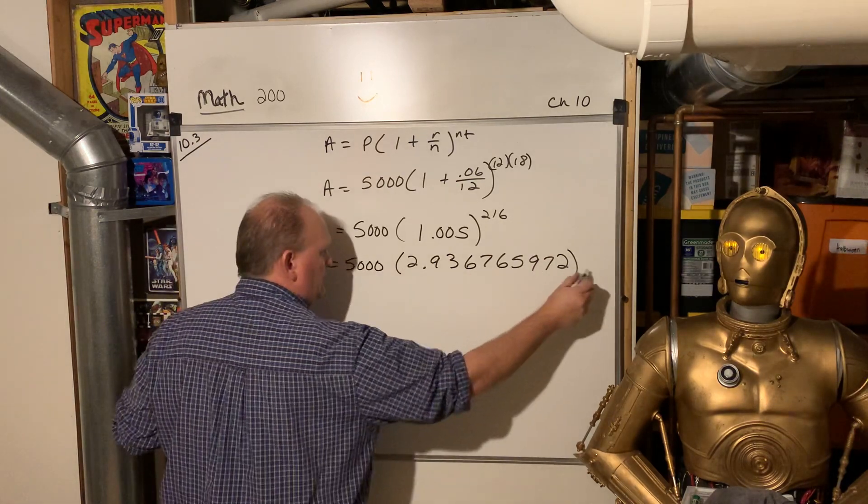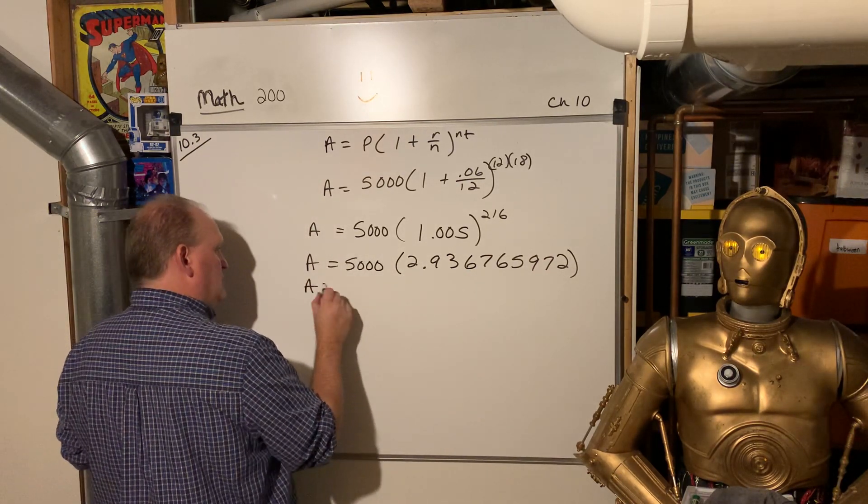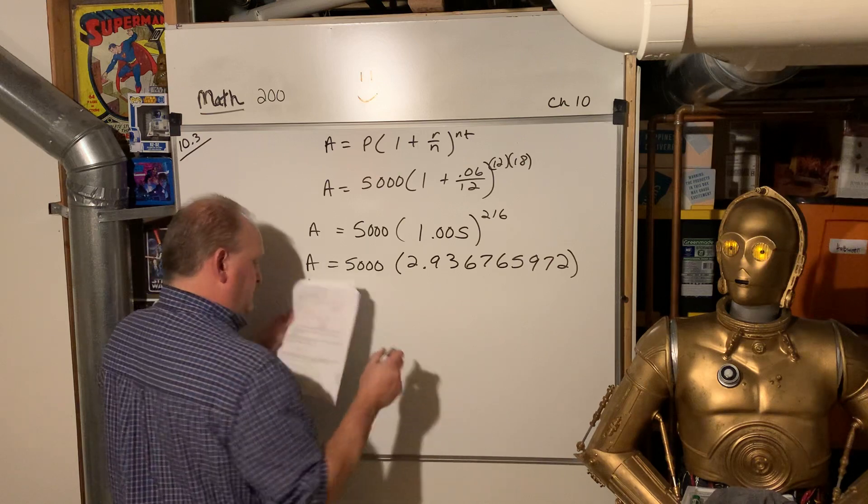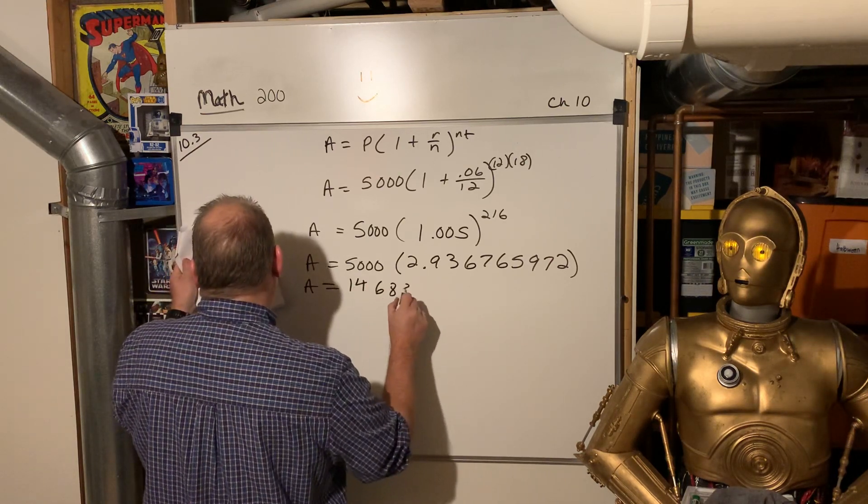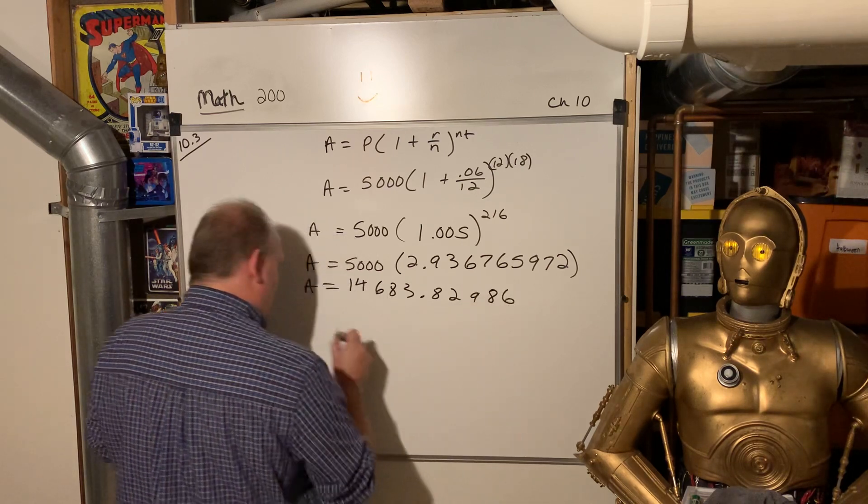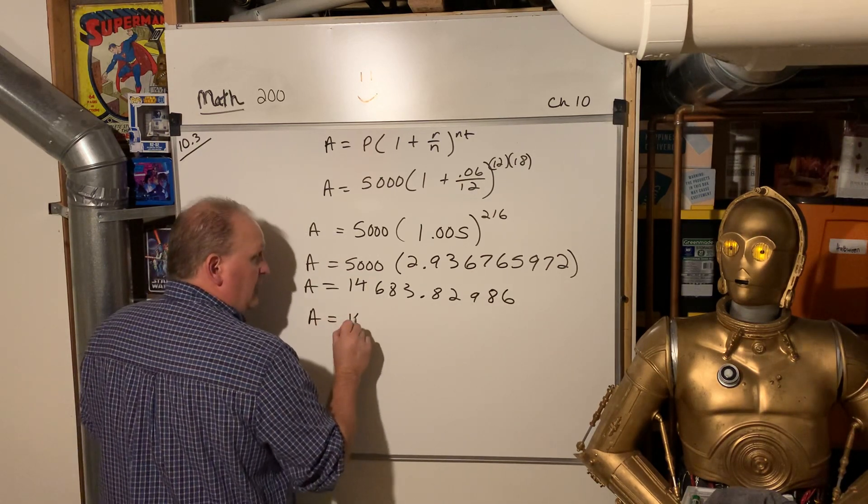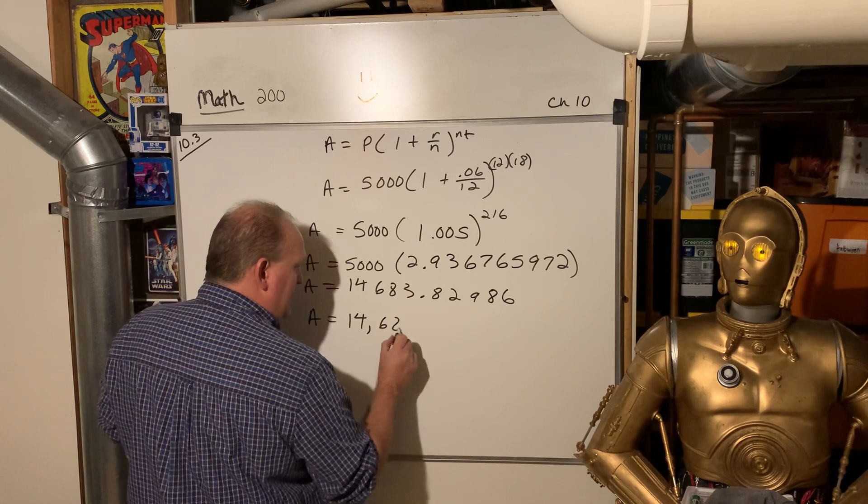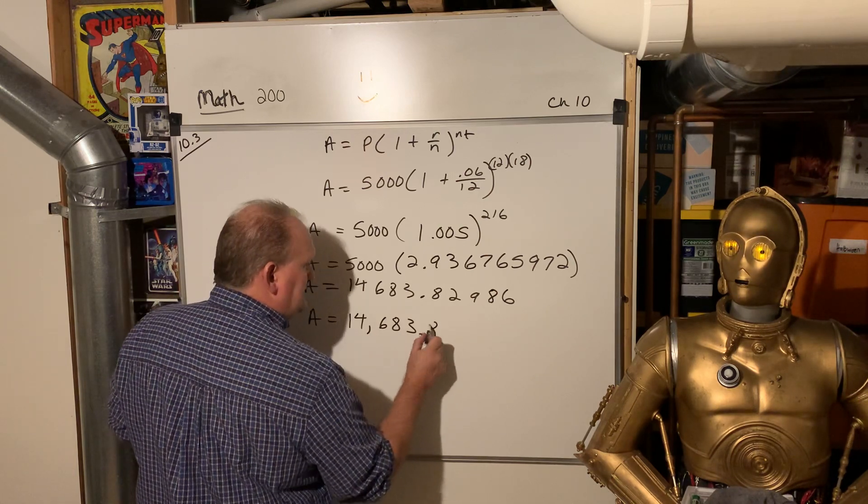That'll give you accurate all the way out to the 12 places. And so then 14,683.82986. So we're looking at $14,683.83.